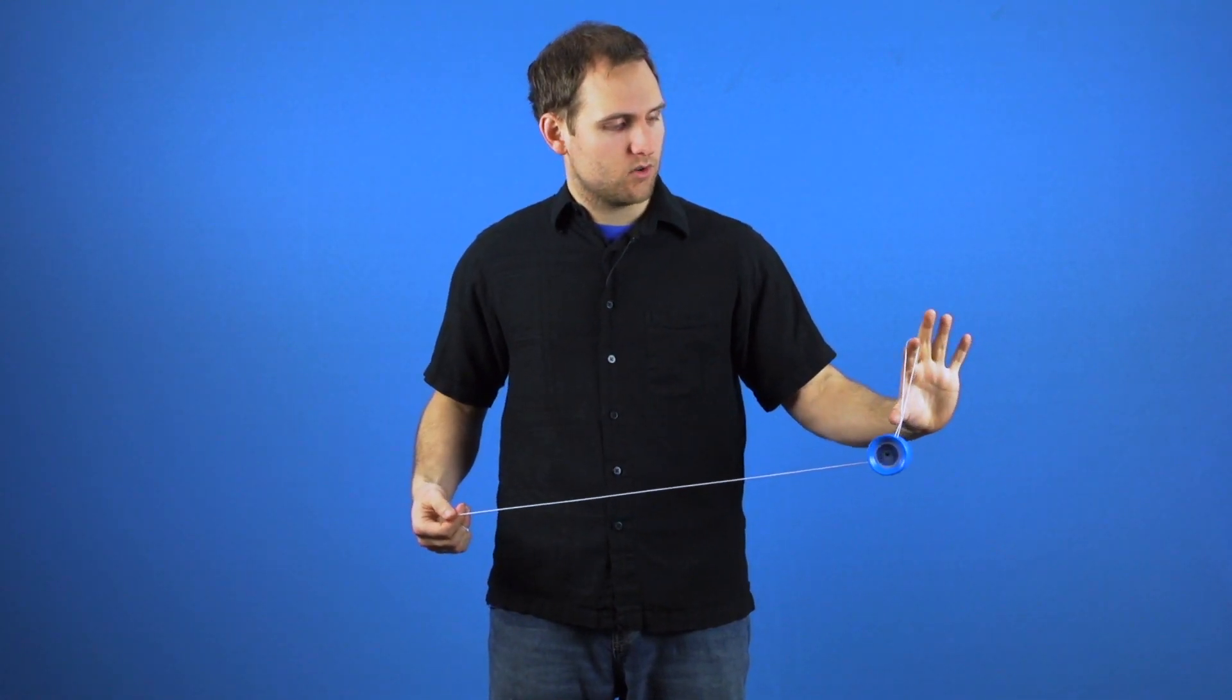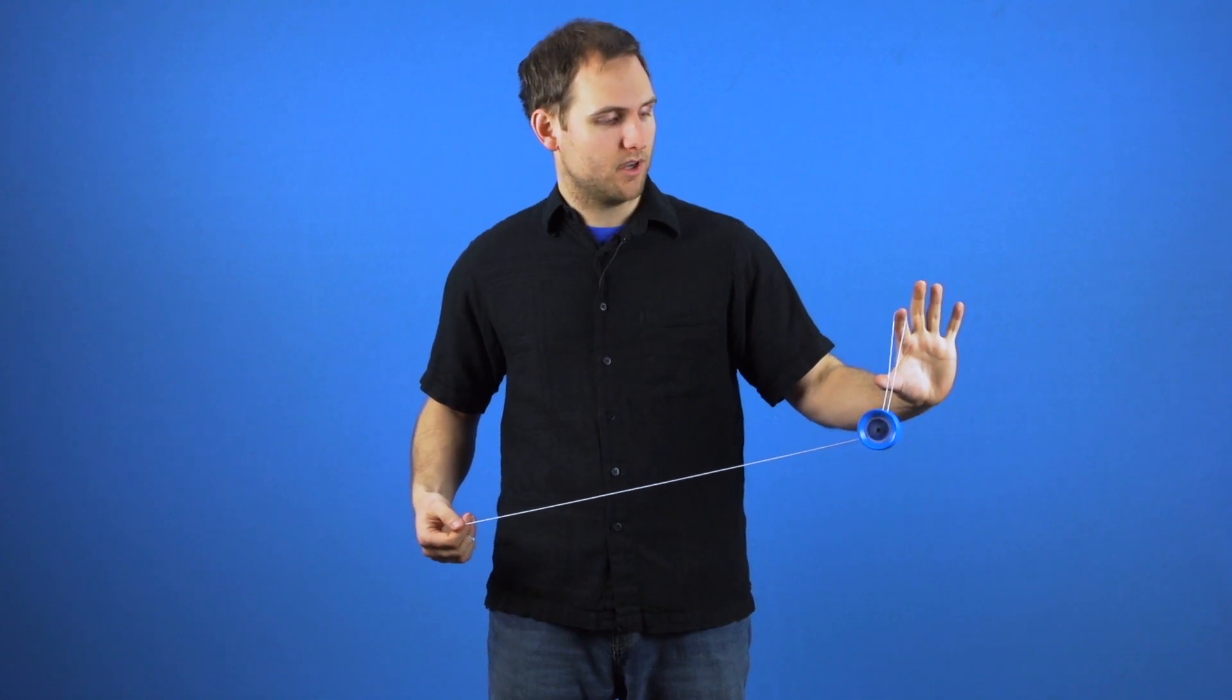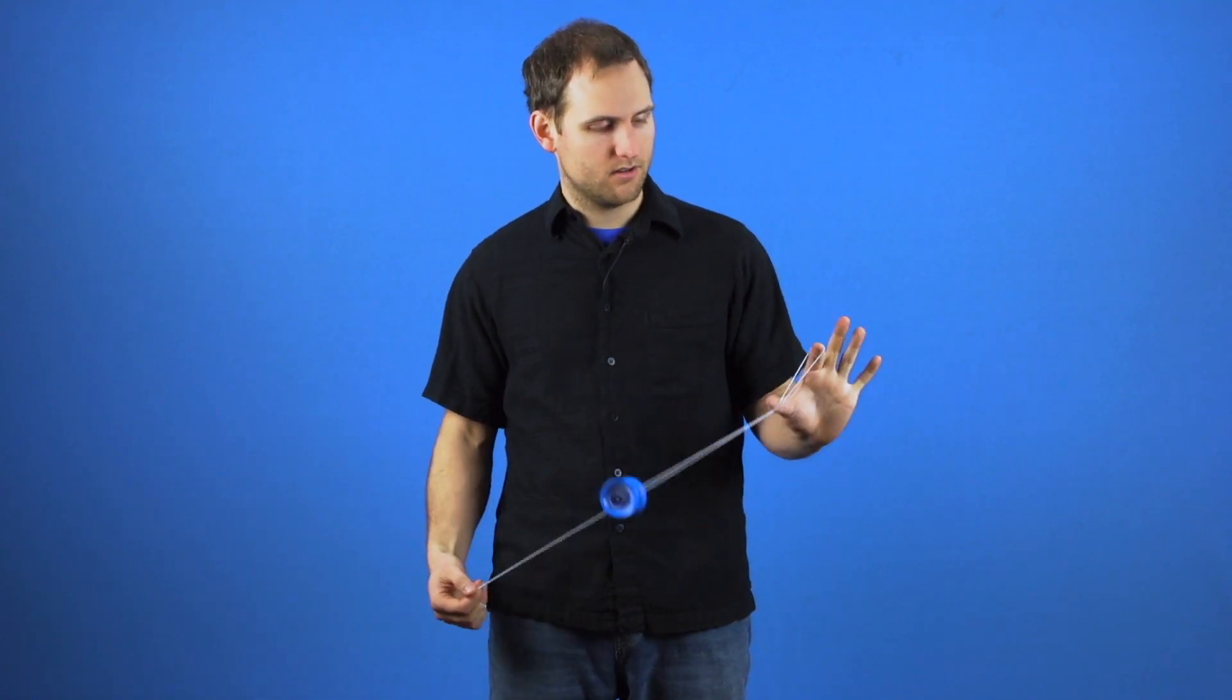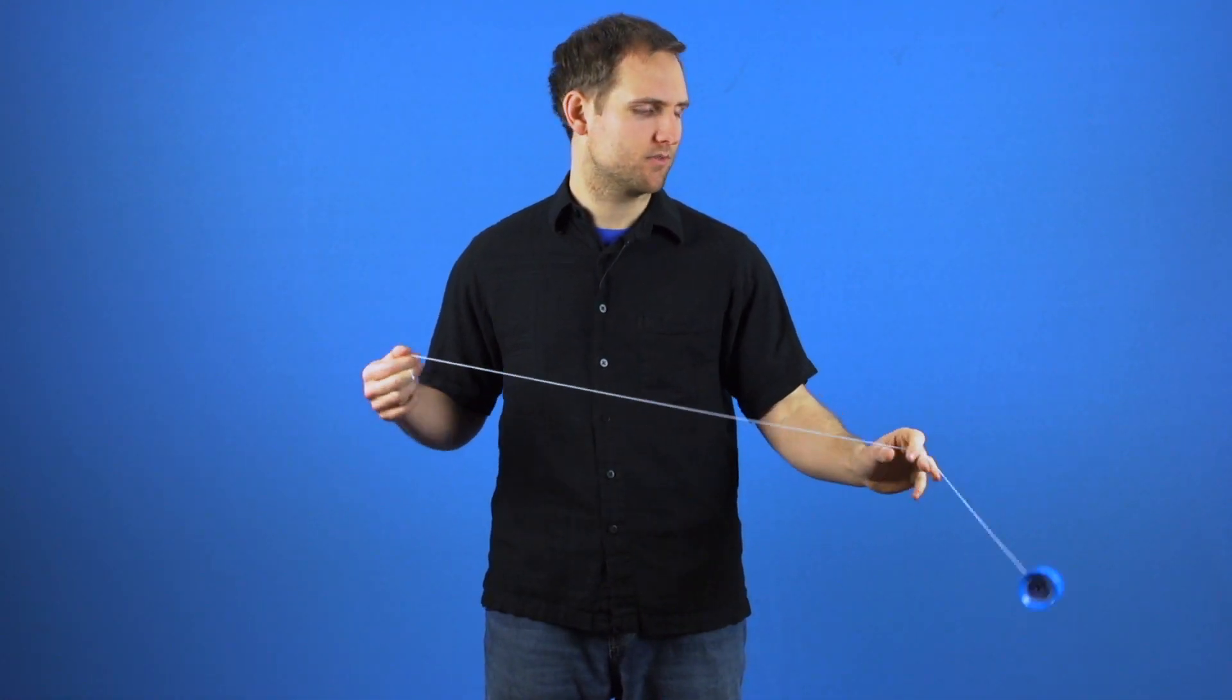The other tip is that you want the yoyo close to your thumb. You can see how close mine is to my thumb. If I have got the yoyo way out here and I try to land it, it is a lot more difficult. So keep that yoyo close to the thumb; that will make popping over really easy.